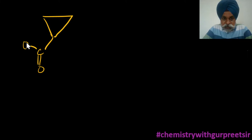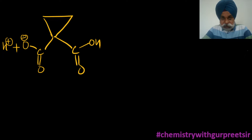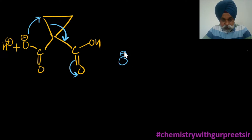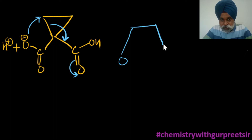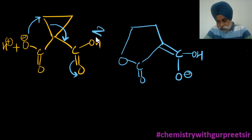Another direction: if this part undergoes ionization to give a negative charge, the three-membered ring — which is not stable due to angle strain — wants to open up. If this carbon attacks another carbon, that bond shifts, and the ring opens. The O-negative that carried the negative charge gets joined, giving a five-membered ring structure with a double bond generated in the process.